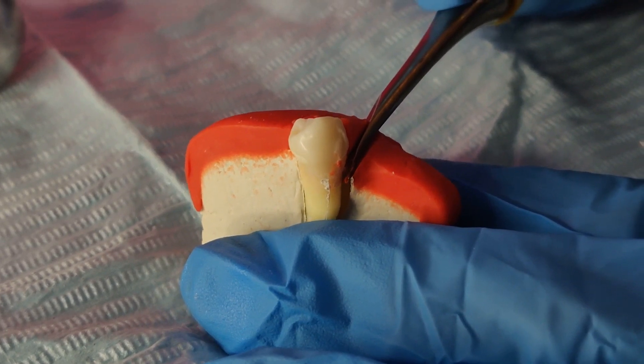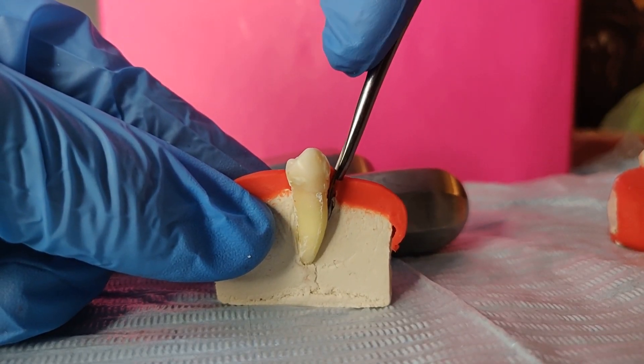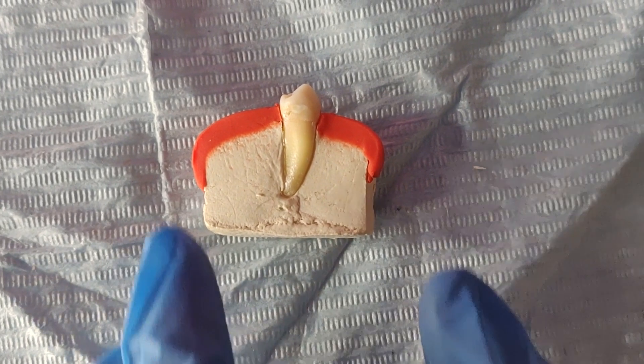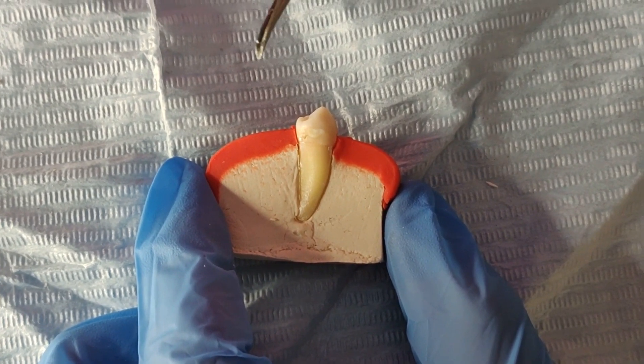In this cross section of the bone and the gingiva you can notice the wedge principle. A straight elevator is used to luxate a tooth from its socket. A small elevator is wedged into the periodontal ligament space which displaces the root or the tooth toward the occlusion and thus out of the socket.